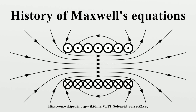Heaviside worked to eliminate the potentials that Maxwell had used as the central concepts in his equations. This effort was somewhat controversial, though it was understood by 1884 that the potentials must propagate at the speed of light like the fields, unlike the then-conception of gravitational potential as instantaneous action at a distance.